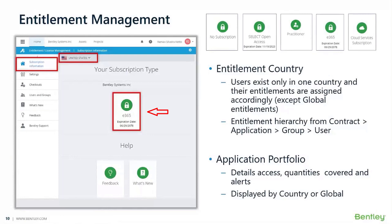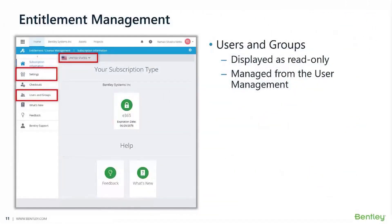Once you click on your subscription type — for example, clicking on the E365 rectangle highlighted in red — it takes you to your application portfolio. There you'll see which licenses and applications are covered in your contract, with details and access to quantities, and alerts set up for your licenses, displayed by country or globally. The expiration date shown includes a 60-day grace period added on top of the actual contract expiration date, so your actual contract expiration date is the date shown minus 60 days.